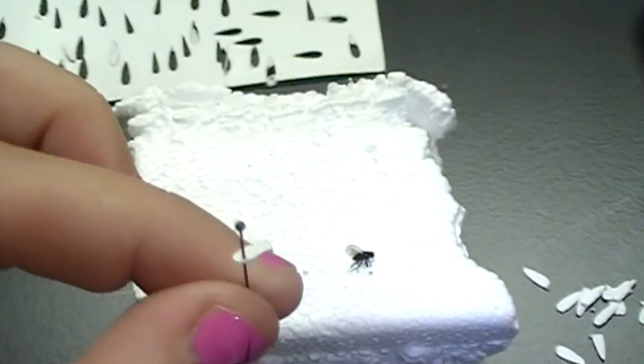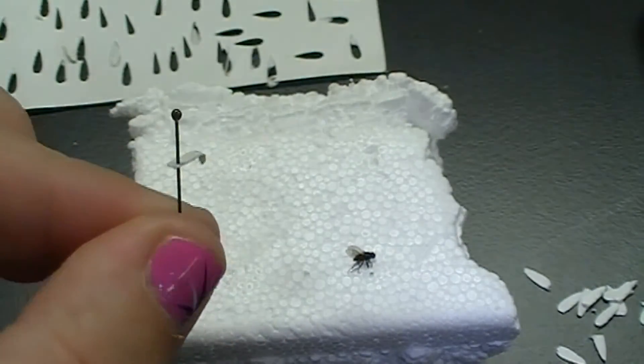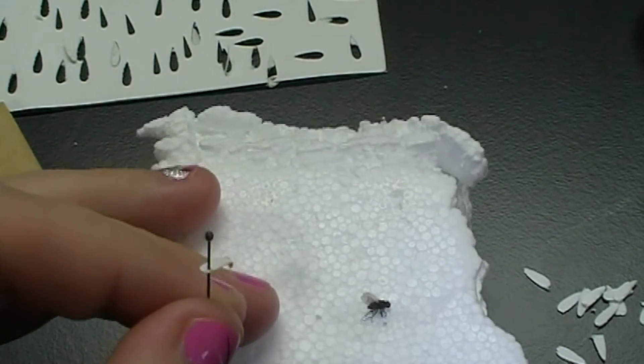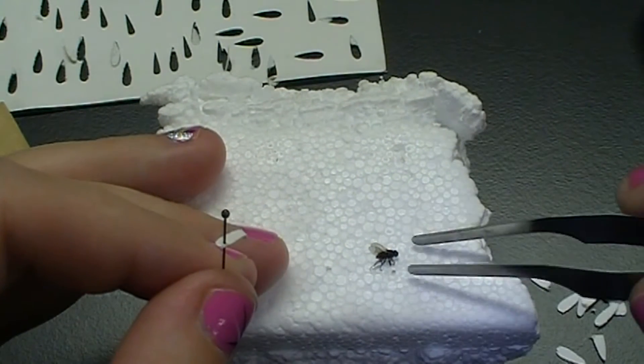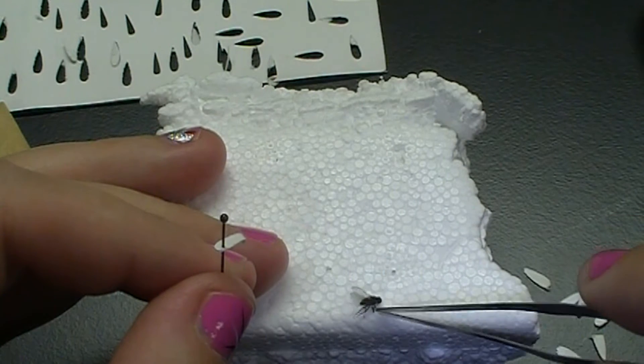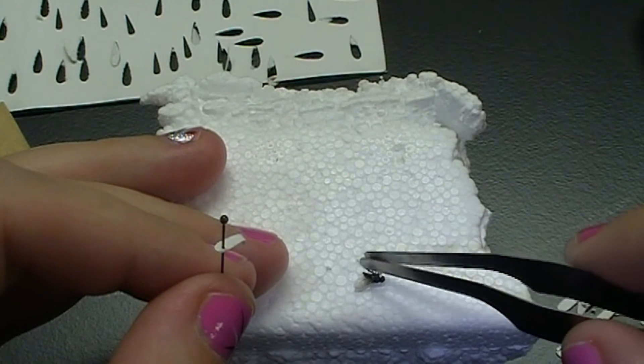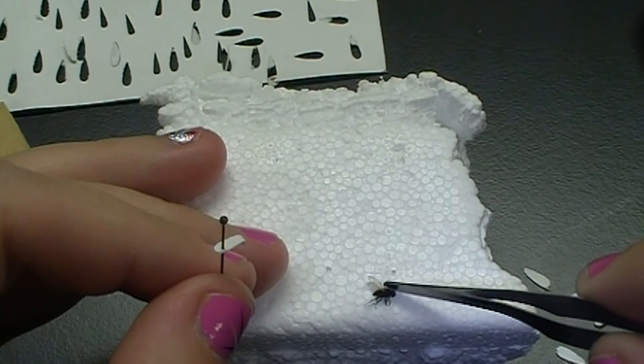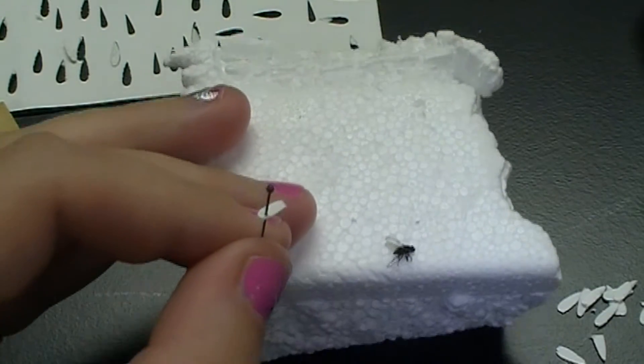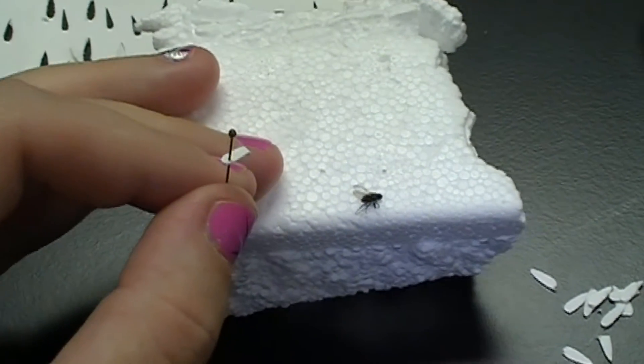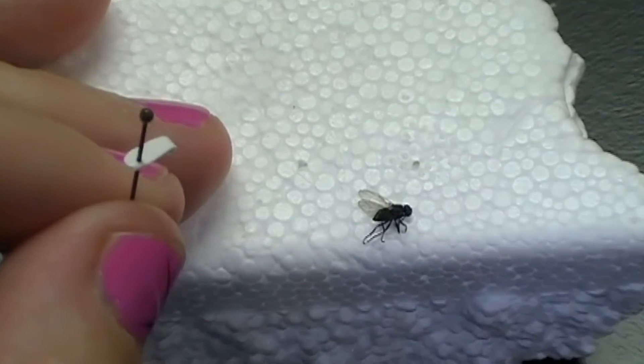Once I have my point and I'm pretty happy with the angle at which it's resting, I move my specimen down to the edge of the styrofoam because I think it's a little bit easier to actually glue it to the point when it's at the edge of the styrofoam. But that's just personal preference.